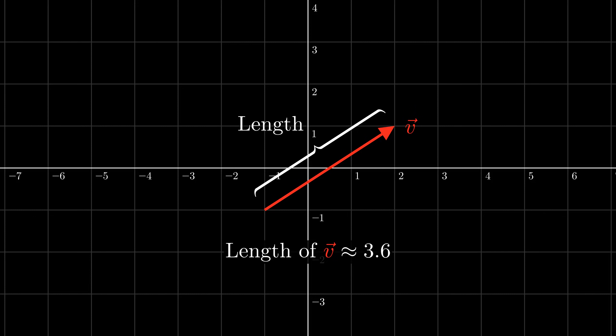Now, it can be a bit annoying to describe the length of a vector in an equation using words like we did here. It would be helpful to have some kind of notation for the length of a vector. But what notation should we use? Let's look at something that we already know about, numbers.